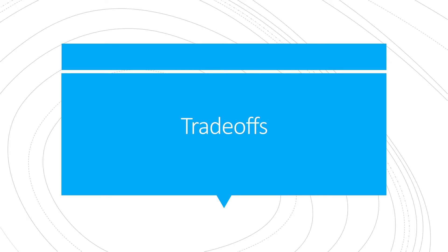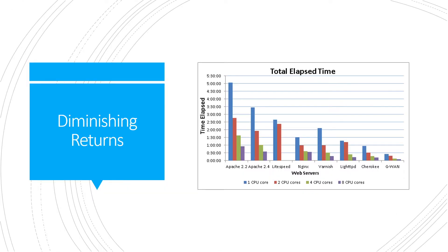Now let's take a closer look at some of those trade-offs. First is the diminishing returns of vertical scaling. Looking at this chart, the blue represents one CPU core on the server, gradually going up to eight. From one to two CPU cores you get almost a double increase in performance, but once you go to three or four cores it gradually drops off, and at eight cores you barely get any performance bonus — even though you're paying double the money or more for those extra cores. This is the core limitation of vertical scaling: you keep pumping in more money but you're not getting as much return on that investment.